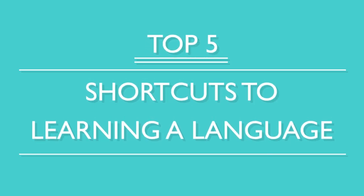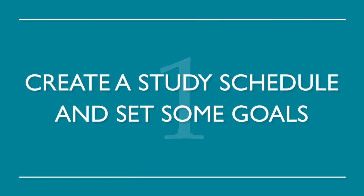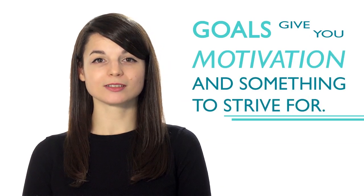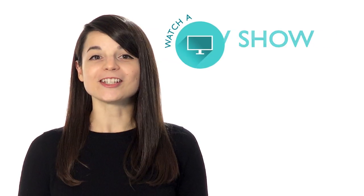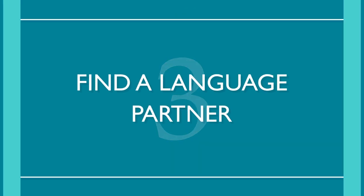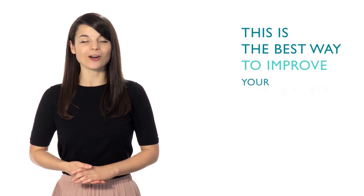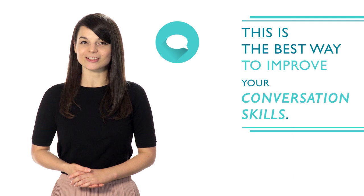You've decided to study a new language — so now what? You want to become fluent fast, right? Here are the top five shortcuts to learning a language. Number one: create a study schedule and set some goals. Many language learners are unorganized — creating a schedule allows you to free up time to study consistently, and goals give you motivation and something to strive for. Number two: make it fun. If you learn how to make your study time enjoyable, you'll be more inclined to study — watch a TV show with subtitles or listen to some music. Number three: find a language partner. This is the best way to improve your conversation skills — it will help you gain fluency faster and increase confidence when speaking.